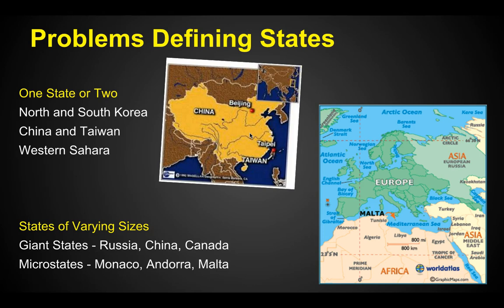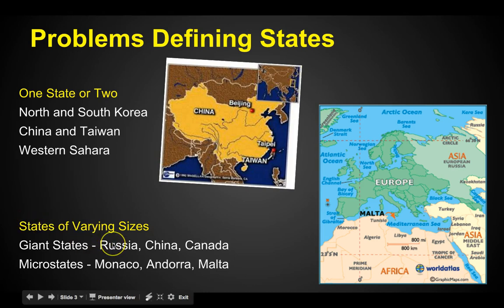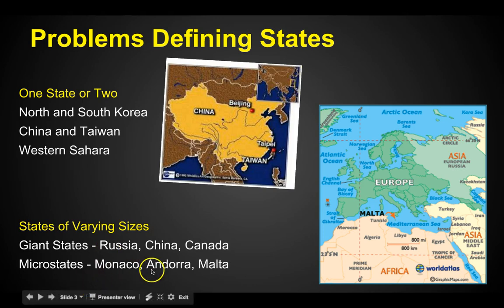States of varying sizes. It should be easy to define a state because you look at the map and it's clearly outlined. That's easy when you think of places like Russia, which takes up almost an entire continent, or China and Canada — these are huge states. Then you think about states as small as cities, like Monaco, Andorra, and Malta. For example, there's Malta right off the boot of Italy and Sicily. How does that compare to Russia? Geographically speaking, it's very small.